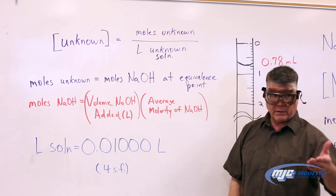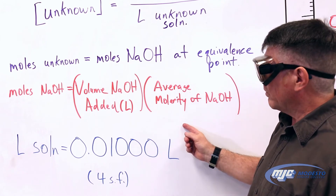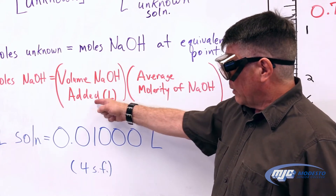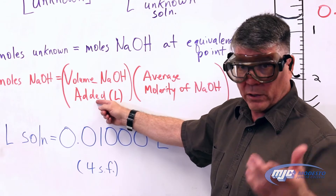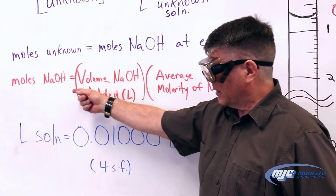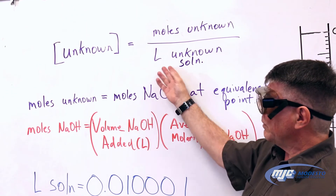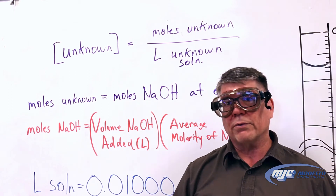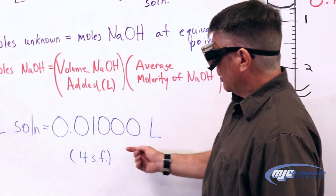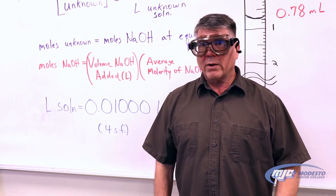We determine the equivalence point with our indicator. To get the moles of sodium hydroxide at the equivalence point, we use the average molarity we calculated in the first part — where we performed the titration three times and took the average. The volume of sodium hydroxide added in liters, times the molarity of sodium hydroxide, gives us moles of sodium hydroxide, which equals the moles of unknown acid. The liters of our unknown solution are always 10.00 milliliters — measured with a volumetric pipette — which is 0.0100 liters. These trailing zeros are important; it's four significant figures.